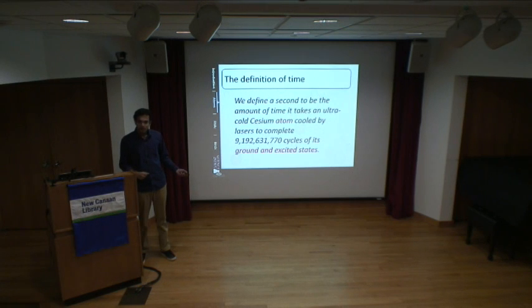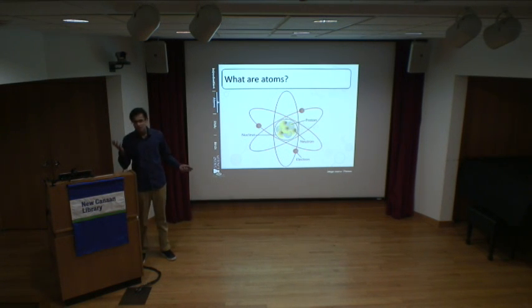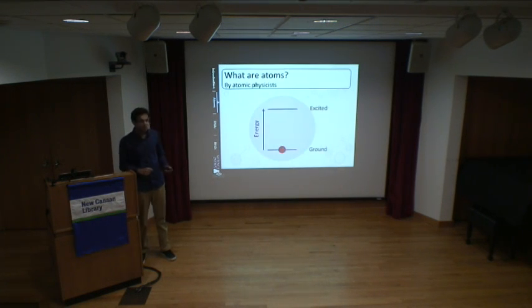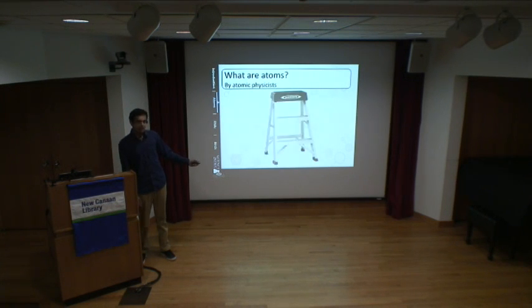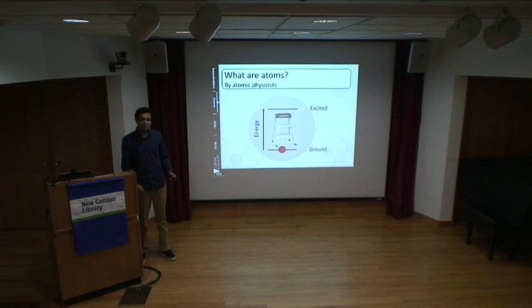Now let's look at atoms and their ground and excited states. Here's a model of the atom with a nucleus containing protons and neutrons, and electrons orbiting it. But we can simplify this: the atom can be in one of two states — a ground state, the lower rung of a ladder, or an excited state, the upper rung. The atom is very lazy and always prefers to stay in the ground state.